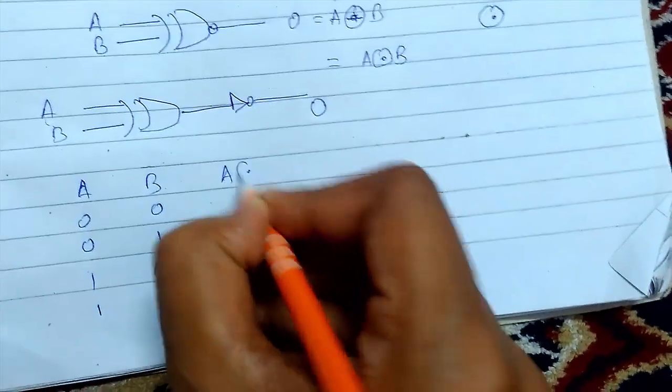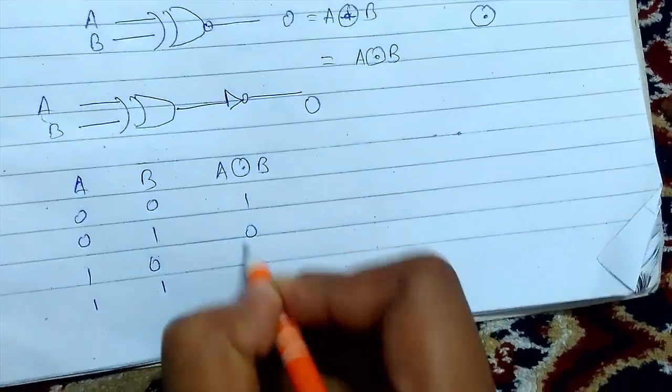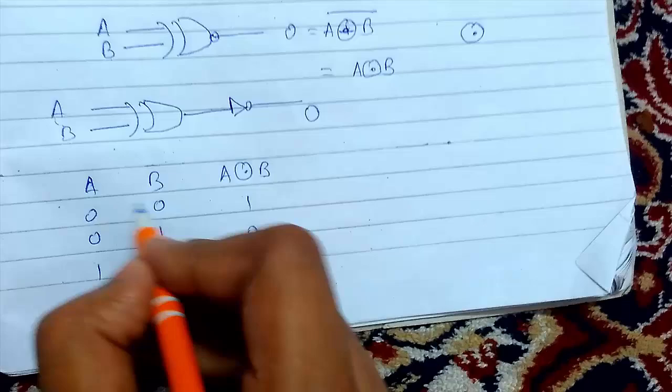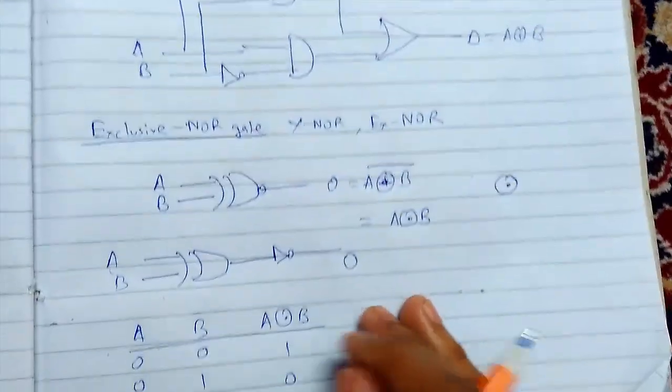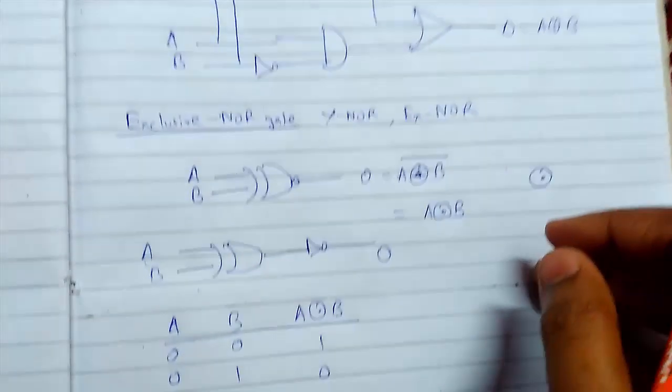This is the symbol for XNOR. For even numbers of 1's, it will give the output 1, or HIGH. So this was all about gates - thanks for watching.